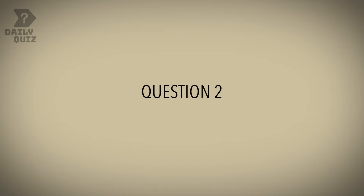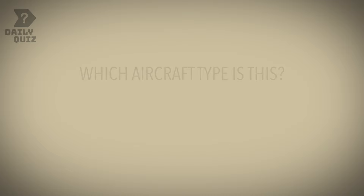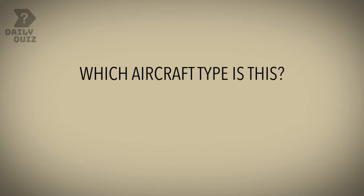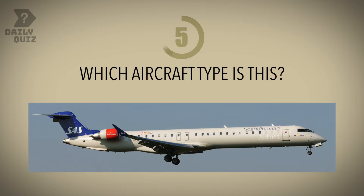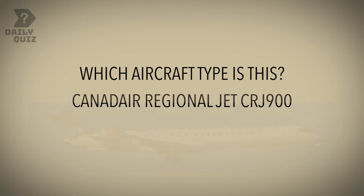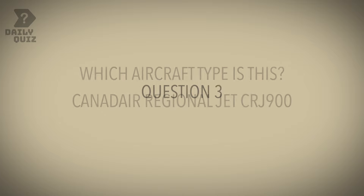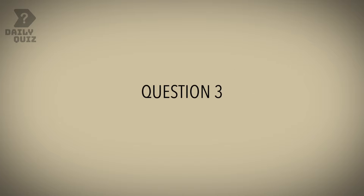Question two: which aircraft type is this? Canadair Regional Jet CRJ-900.